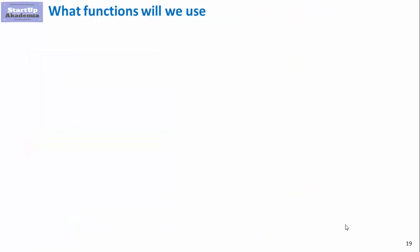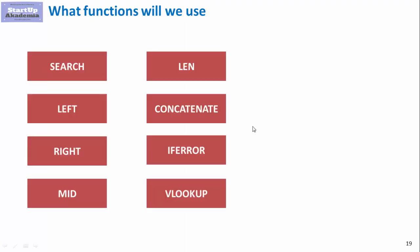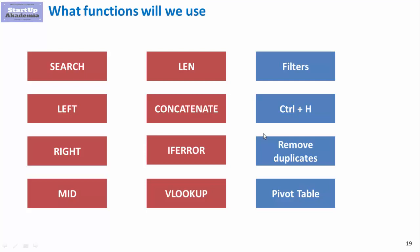Before we go into analysis, here's a short intro to the functions we'll be using. There are a bunch of text-related functions: SEARCH, LEFT, RIGHT, MID, and CONCATENATE. On top of that we'll use two general functions — IFERROR and VLOOKUP. We'll also use filters, COUNTIF, find-and-replace, remove duplicates, and pivot tables.